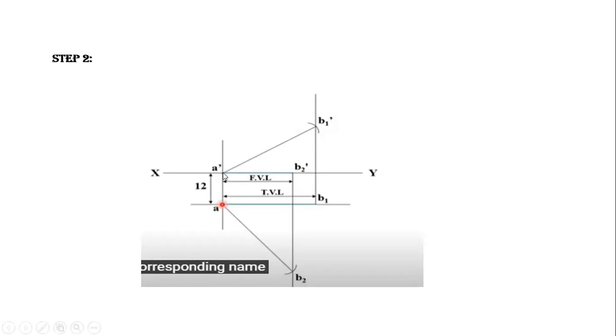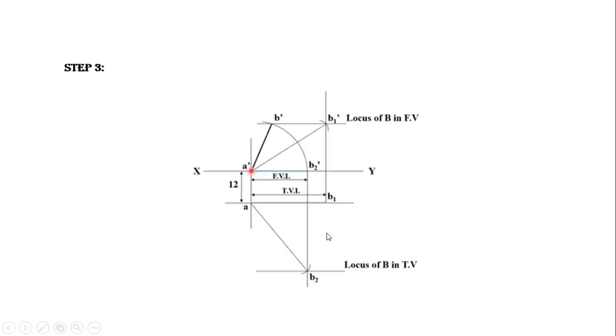Place the compass at the point A dash and cut the arc on the vertical projection line B1 and this is going to be B1 dash. Do the same thing for the top view. Take same radius 75 mm, mark point B2 on the vertical projection line B2 dash with A as center. Join A dash B1 dash and AB2 as shown here.